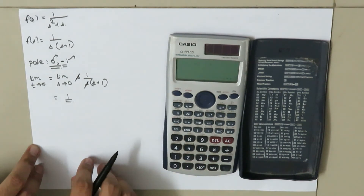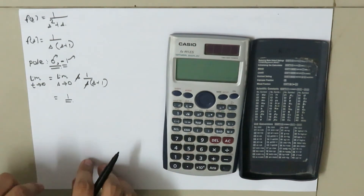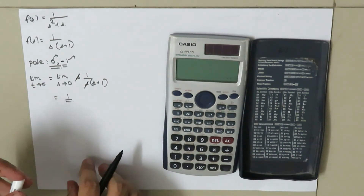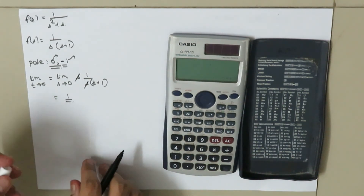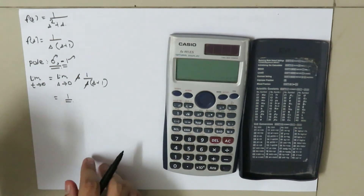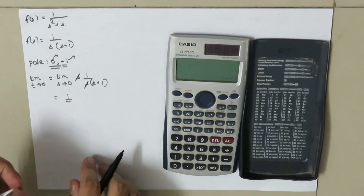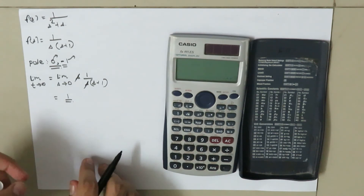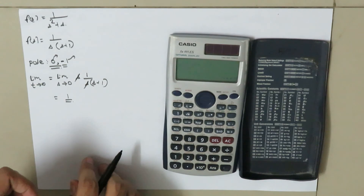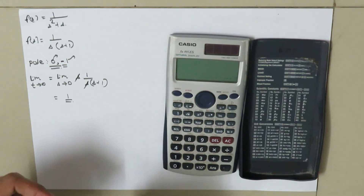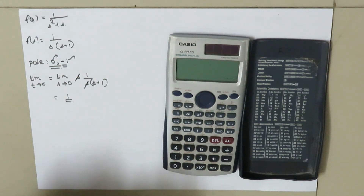So that covers the key condition for using the final value theorem. It is important to note that the final value theorem is only applicable when the pole lies in the left half plane or when the pole lies on the origin itself. Thank you for watching this video.